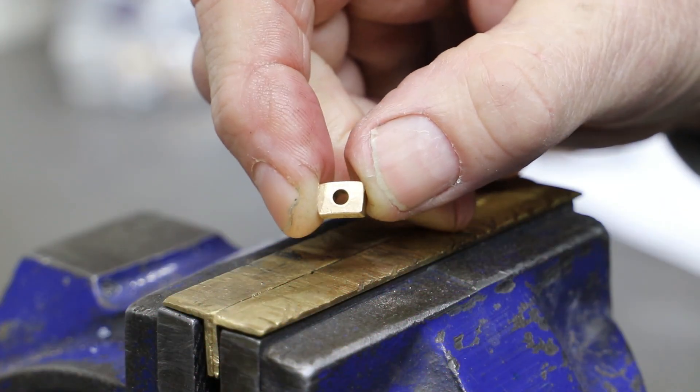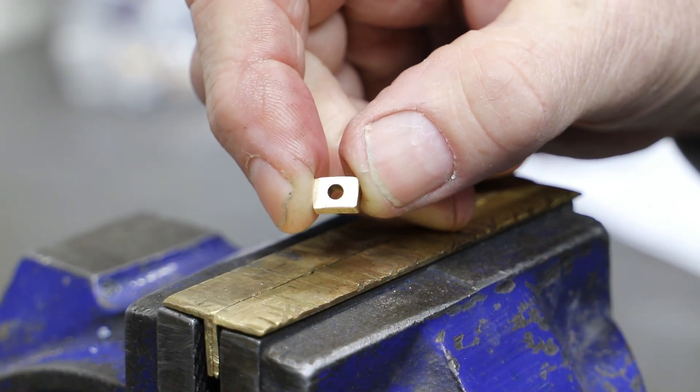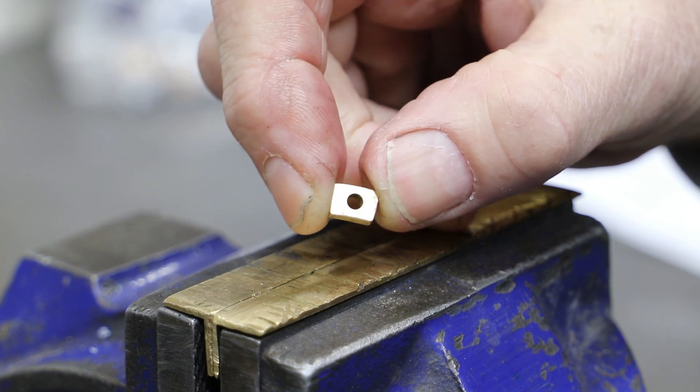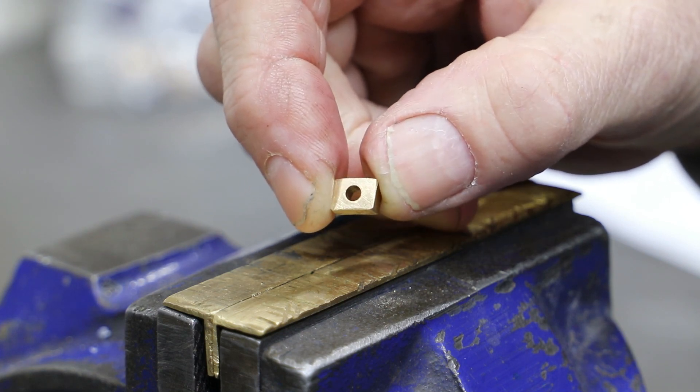Or the third option is to drill out the hole in the die block to say 4mm, and then turn and fit a sleeve to bring it back down to 3mm.